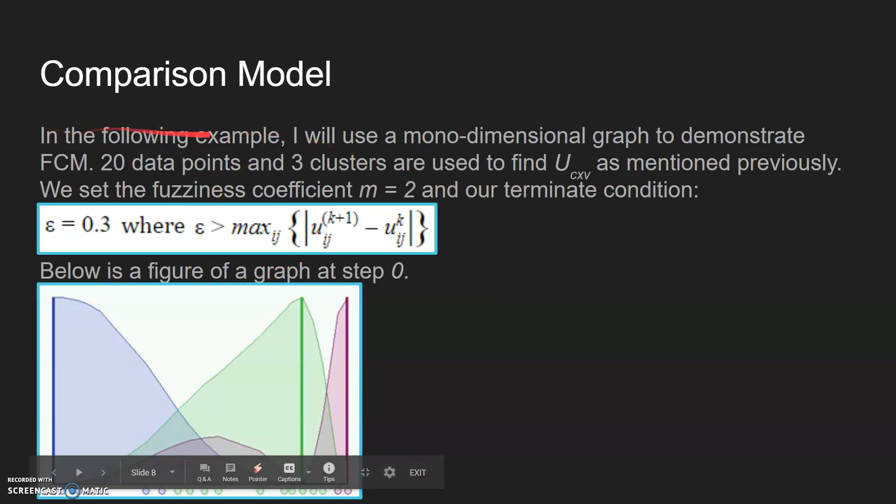Here's a comparison model. In the following example, it's a one-dimensional graph to demonstrate FCM with 20 data points and three clusters, which is trying to find the matrix you see XV, which basically just holds all the membership values.